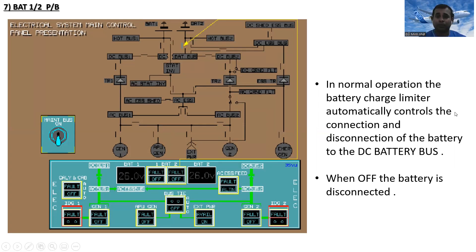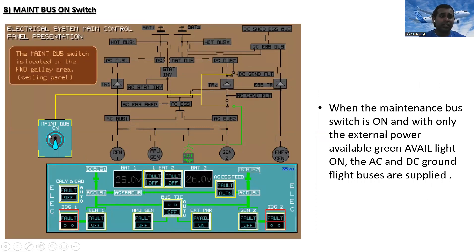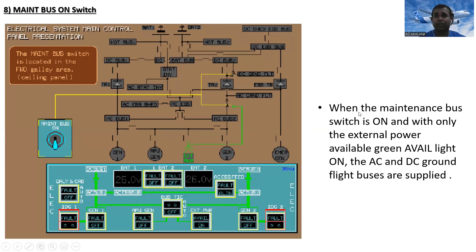The maintenance bus on switch: when the maintenance bus switch is on and only the external power is available, the green AVAIL light comes on. When the green AVAIL light is on, the AC and DC ground/flight buses are supplied. The maintenance bus switch is located in the forward galley area ceiling panel.